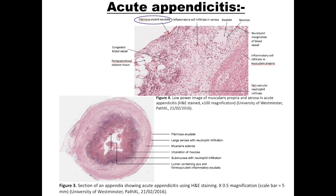Fibrinopurulent exudate — comprised of fibrin and pus not normally witnessed — is seen coating the serosa. However, in acute appendicitis, the serosa has fibrin covering the outside of the cut section of the lumen and fibrinopurulent serosal exudate, ulceration, and necrosis.